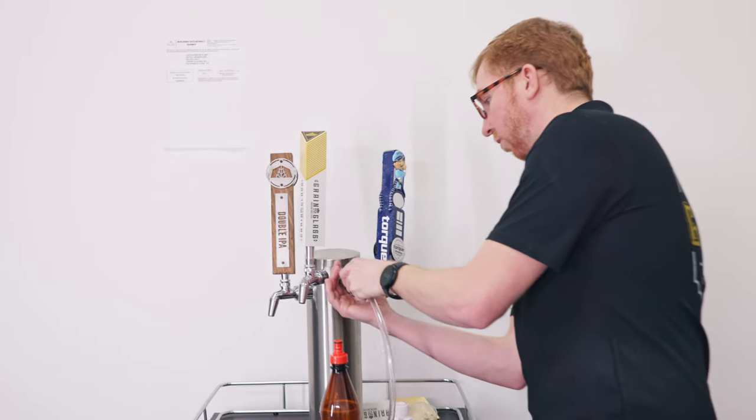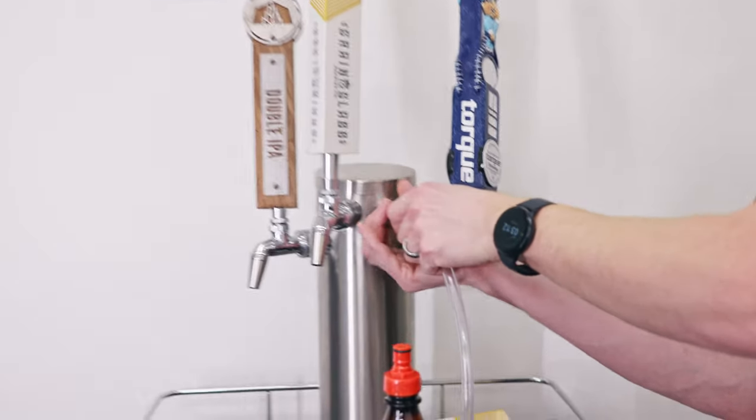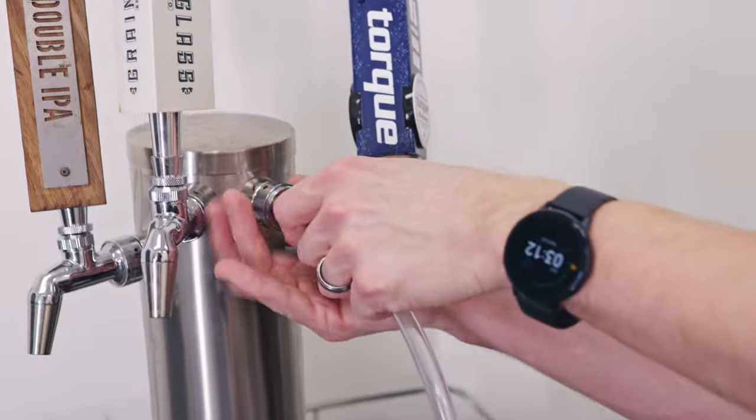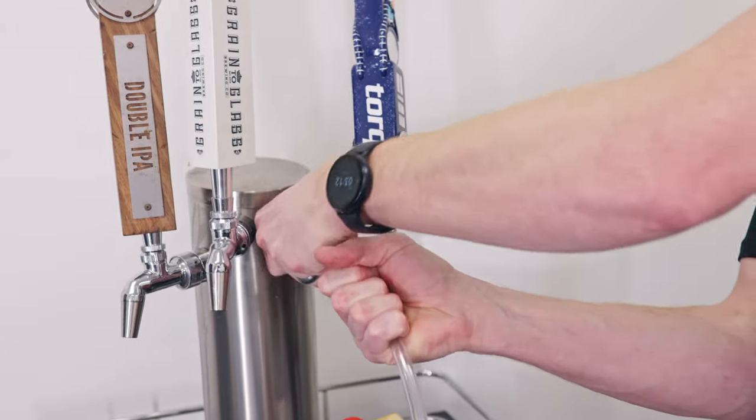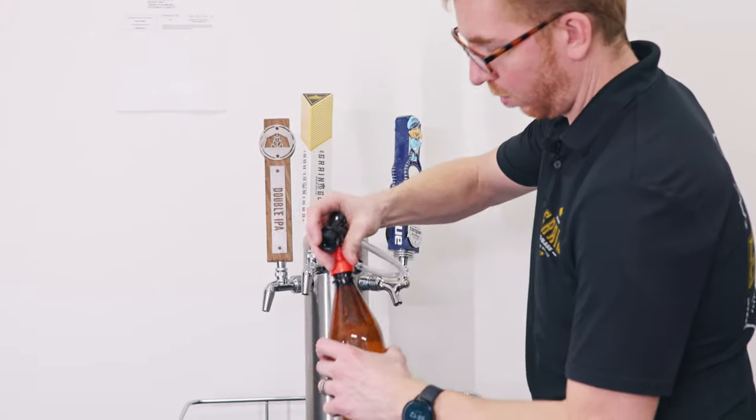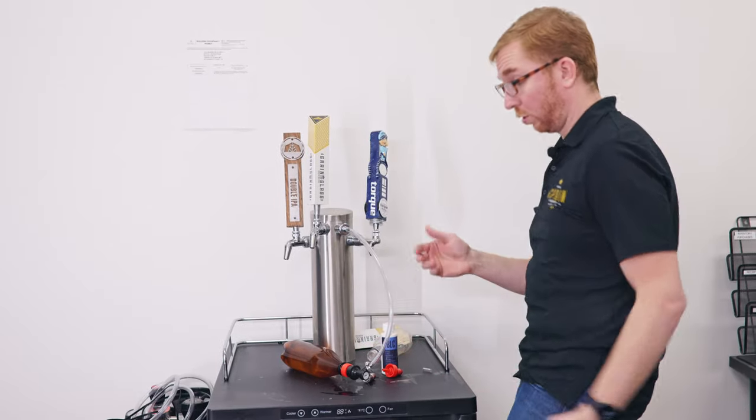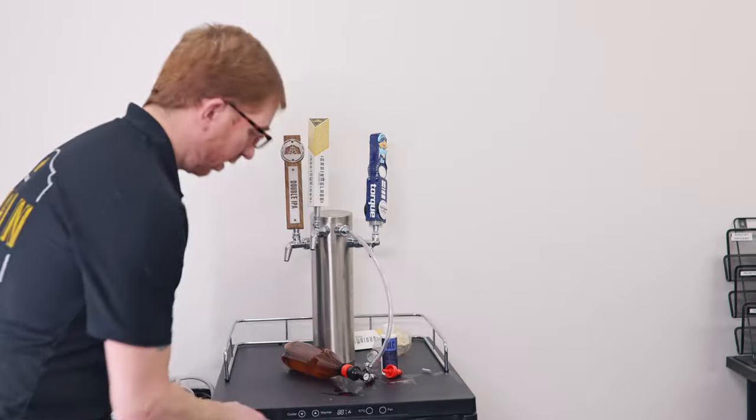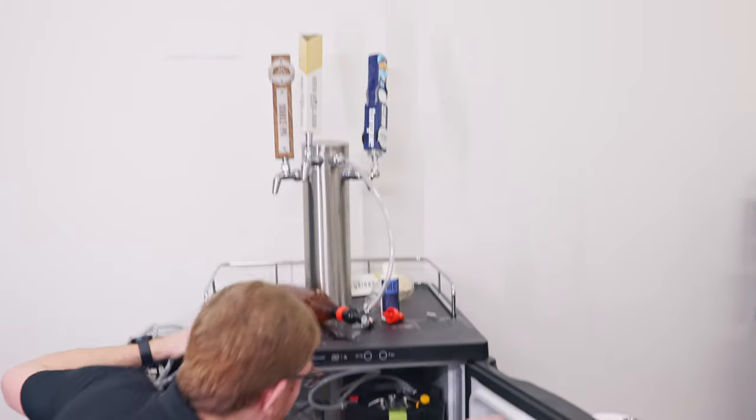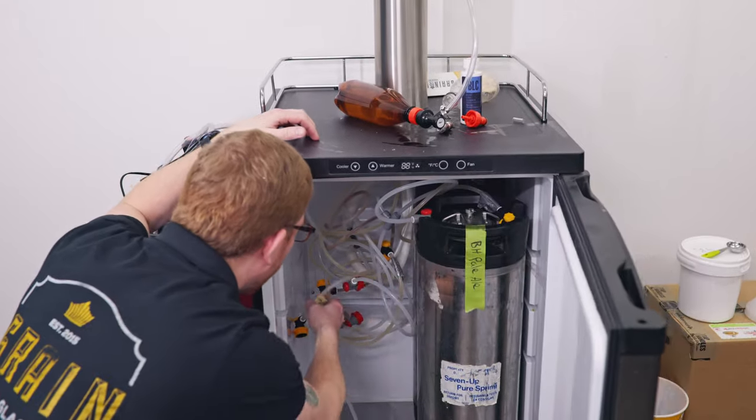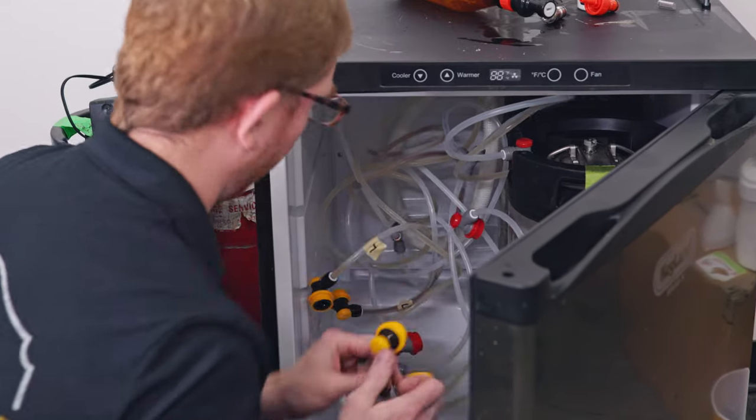So we're going to screw this on here. Connect it to the bottle with our cleaning solution. Then you can't get the cleaning solution through the lines unless the disconnect, which I hope is labeled number three. Number three. Perfect.